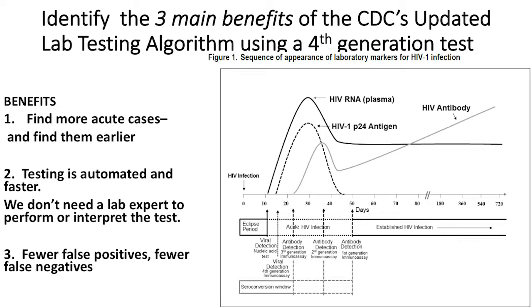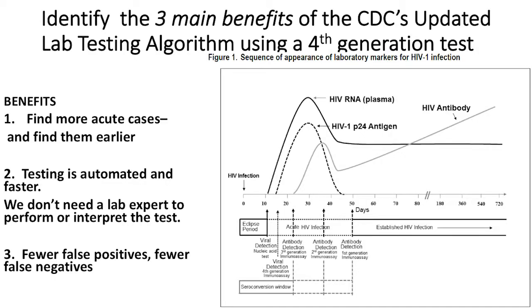There are three benefits of the fourth generation test. First, we find more acute cases and we find them faster — if we screen people at risk and capture them early, they transmit less, get on therapy faster, and feel better. Second, the test is automated so the machine comes out with an answer — almost always yes or no, very rarely maybe, kind of like a pregnancy test. Third, there are fewer false positives and fewer false negatives.